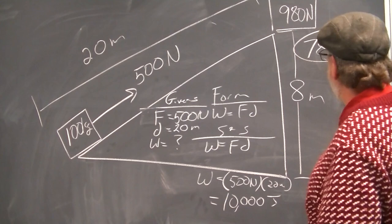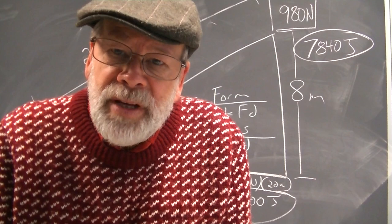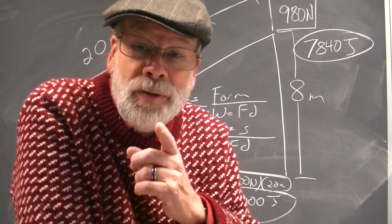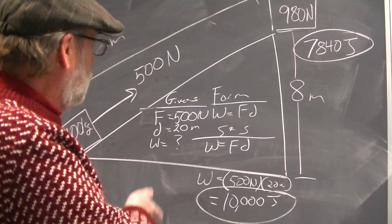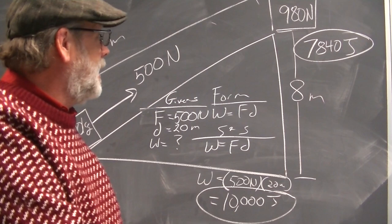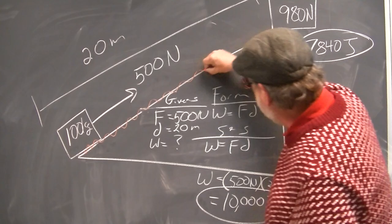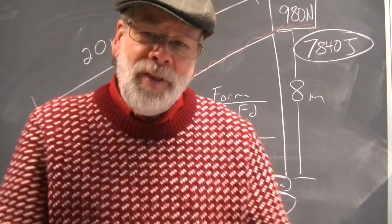Look at those numbers. 7,840 joules is how much work I did against gravity. 10,000 joules is how much work I actually did. Where's the missing work? What happened to it? I pushed it up a frictional surface, so some of that work was used to overcome friction. How much was used to overcome friction? Just subtract the two — that's 2,160 joules of work that overcame friction. And where is that? It's right here on the surface and on the bottom of the crate — low-grade thermal emission. That's what it turns into.